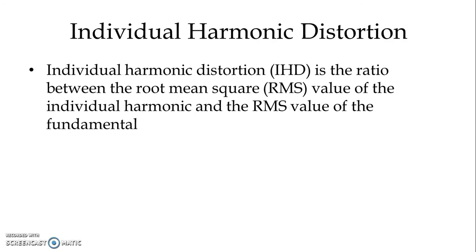Individual harmonic distortion, normally indicated as IHD, is the ratio between the RMS value of the individual harmonic and the RMS value of the fundamental. So when we calculate the individual level of harmonic distortion at each harmonic number or harmonic frequency, it is the ratio of the RMS value of the individual harmonic to the RMS value of the fundamental wave.